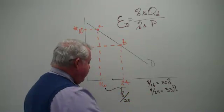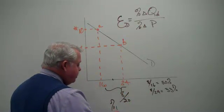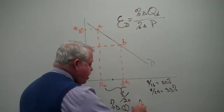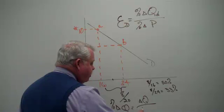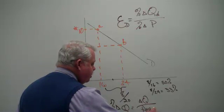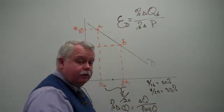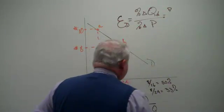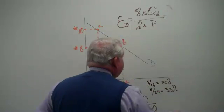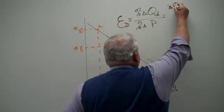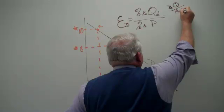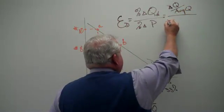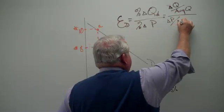And so, I'm going to write it this way. The percentage change in quantity is the change in quantity over the average quantity. It's the change over the average. Let's put it up here. It's the change in quantity over the average quantity.